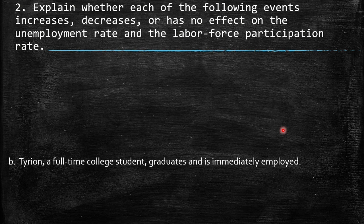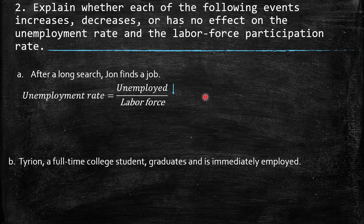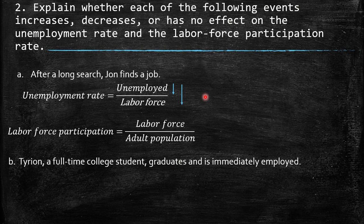Second question: explain whether each of the following events increases, decreases, or has no effect on the unemployment rate and the labor force participation rate. A: after a long search, John finds a job. John belonged to the unemployed before, and now he moves out of that group, so the unemployed decrease while labor force remains the same — the unemployment rate decreases. Labor force participation has no effect because the labor force and adult population both remain the same. B: Tyrion, a full-time college student, graduates and is immediately employed. He moves into the labor force as employed. Unemployed remains the same since he was never unemployed, so there is a decrease in unemployment rate. Labor force increases while adult population remains the same, so labor force participation increases.